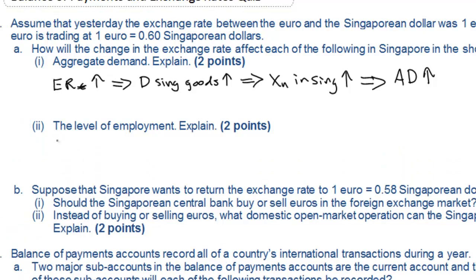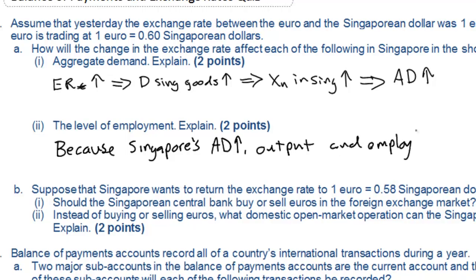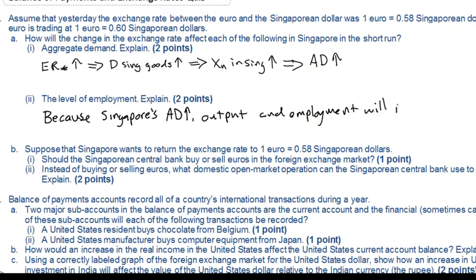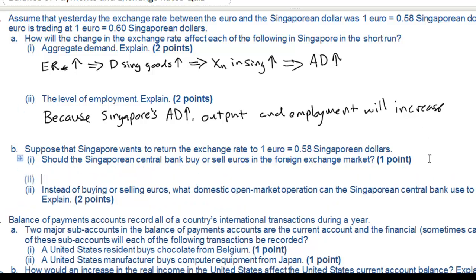What will happen to the level of employment in Singapore? Because AD increases there will be more demand for Singapore goods, therefore there will be more need for labor in Singapore. This will cause employment in Singapore to rise to meet the growing demand from the European consumers for the now relatively cheaper Singapore goods.